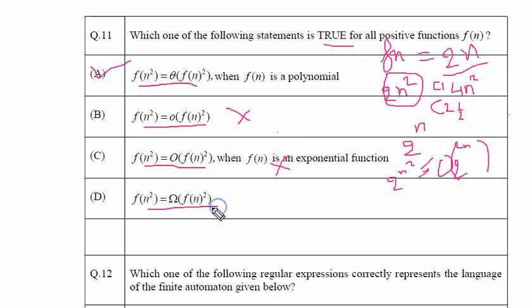And if we look at this option which says that in the polynomial function, f of n square is going to be binded by f of n whole square on the lower side, this is not true because 4n square will not bind 2n square on the lower side. And nothing is mentioned whether it is exponential or whether it is a polynomial, and it is a very general statement. So we will stick to our first choice that answer A is the correct answer for this question.